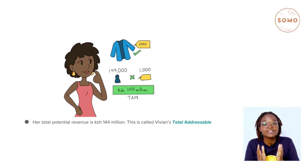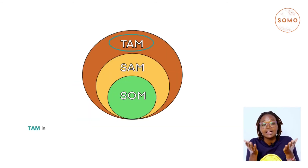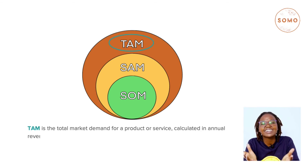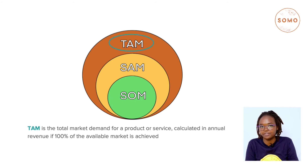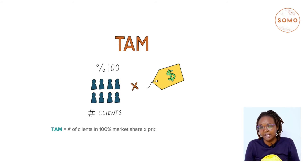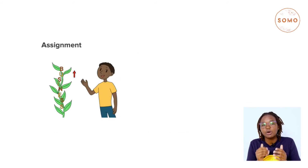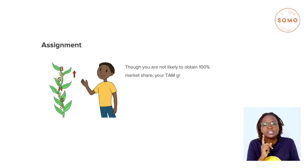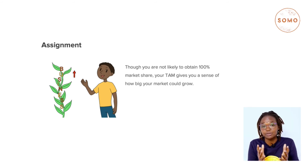This is called Vivian's total addressable market, or TAM. TAM is the total market demand for a product or service, calculated in annual revenue if 100% of the available market is achieved. We calculate TAM by getting the number of clients in 100% market share and multiplying it by the price each client pays. Though you are not likely to obtain 100% market share, TAM gives you a sense of how big your market could grow.